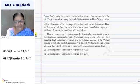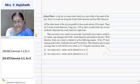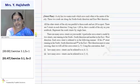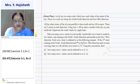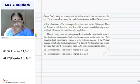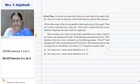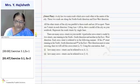Second sum they have given, a city has two main roads which cross each other at the center of the city. These two roads are along the north-south direction and east-west direction. All the other streets of the city run parallel to these roads and are 200 meter apart. There are five streets in each direction. Using one centimeter is 200 meter, draw a model of city on your notebook. Represent the road street by a simple line.